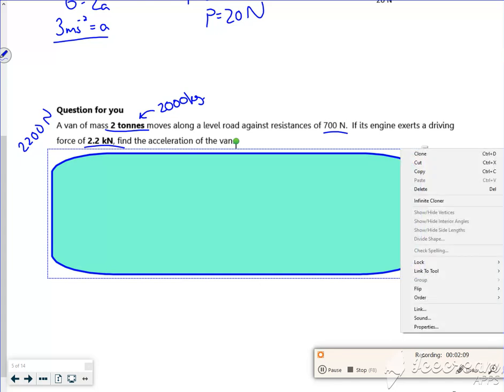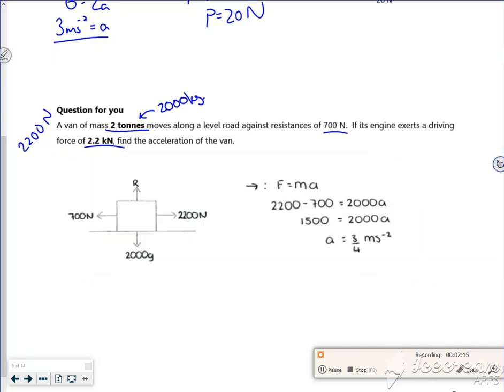So this is one for you, but it seems like it's a lot harder, isn't it? But it's the same idea. So I've got an acceleration going that way. So force in the direction of travel minus force opposing it is equal to the mass times acceleration, and that gives me 3 quarters of a metre per second squared.